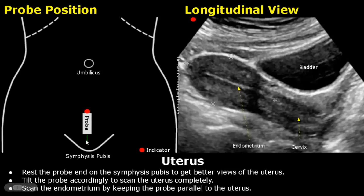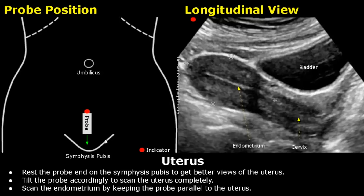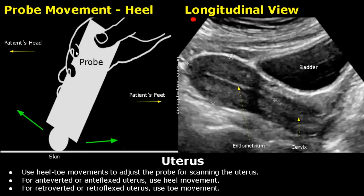You can also rest one end of the probe on the symphysis pubis to get better views of the uterus. Tilt the probe accordingly to scan the uterus completely. For scanning and measuring the endometrium, try to keep the probe parallel to the uterus.